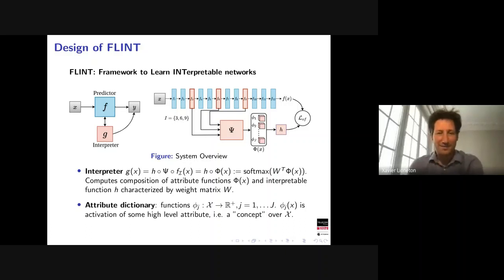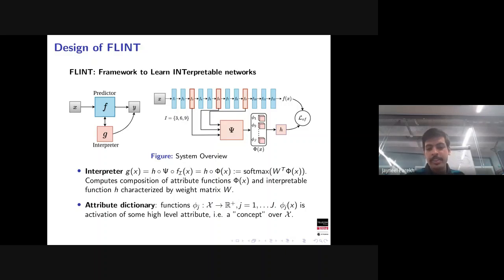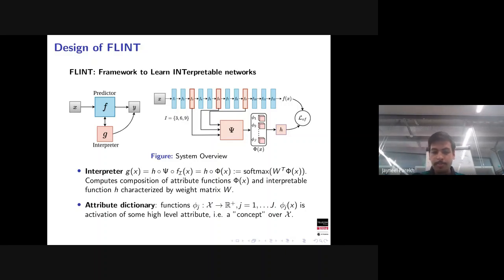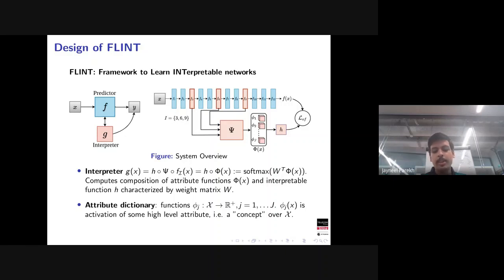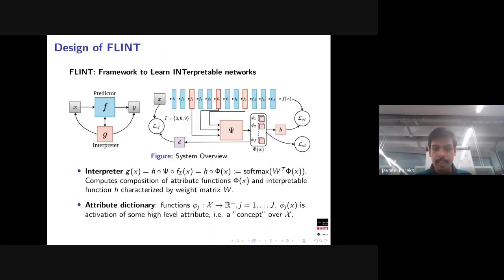The heart of the framework is the representation phi(x) — a dictionary of attribute functions. Each individual attribute function phi_j is a function over the input space with a non-negative real-valued output. Each phi_j(x) represents the activation of some high-level attribute from the input space — it captures some kind of concept. For images, this could correspond to something like a head or a leg.